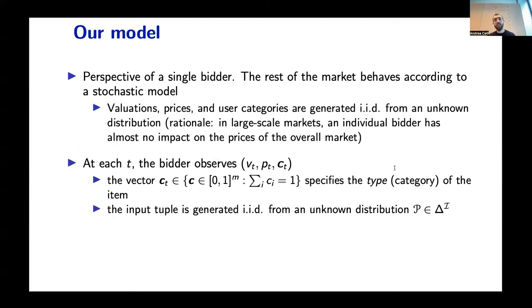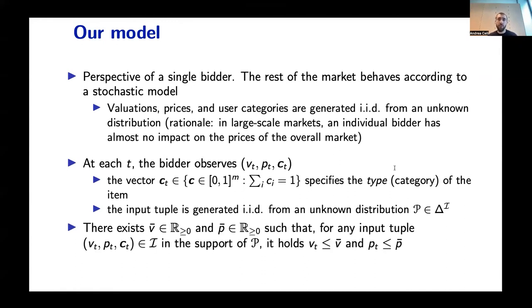So we start from the framework of Balsero and others and show how that can be modified to take our distributional preferences into account. The model that we consider is one in which we focus on a single bidder and the rest of the market is assumed to behave stochastically. This is reasonable in this specific setting because in large scale markets, usually an individual bidder has almost no impact on the prices of the overall market. At each time t, the bidder observes a tuple with evaluation vt, a price pt, and a vector ct which specifies the type of the item arriving at time t.